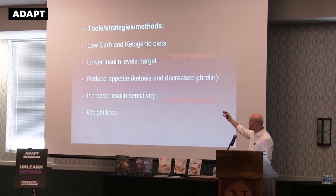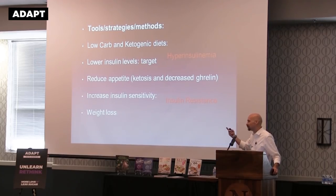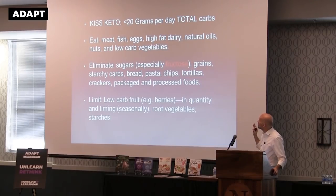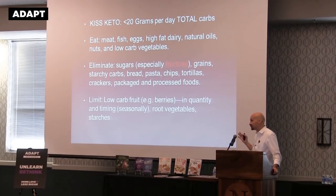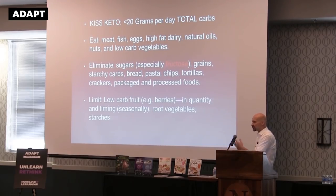Low-carb and ketogenic diets are a key tool. The idea is to lower insulin levels to target hyperinsulinemia, reduce appetite, and decrease ghrelin. I start people with a simple 20 grams of total carbs per day. I know some people do fine with net carbs, but others get into trouble — I find out they're eating a lot of packaged or processed foods with a lot of carbs, and the sources of those aren't always good.